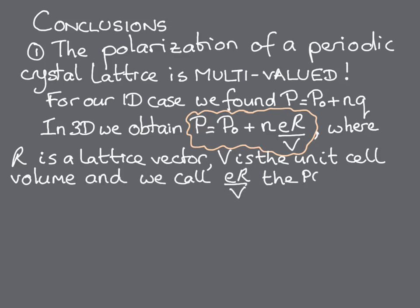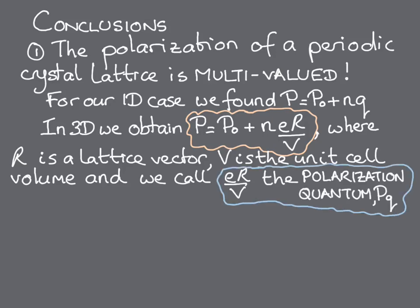This quantity, e times R over V, will pop up a lot, and so we give it a name. It's called the polarization quantum, Pq.